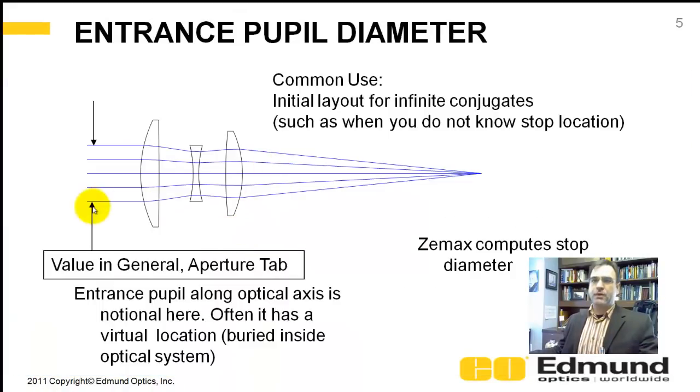The first one is entrance pupil diameter. So what you're doing is you're saying shoot a grid of rays into the optical system that has this diameter here. So the value in the general aperture tab will be your on-axis value. Now I'm showing the entrance pupils being located here in the optical axis.